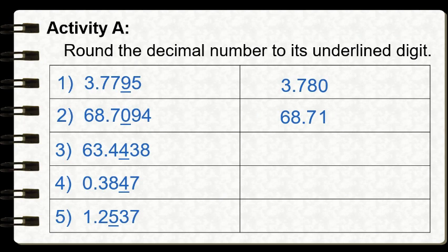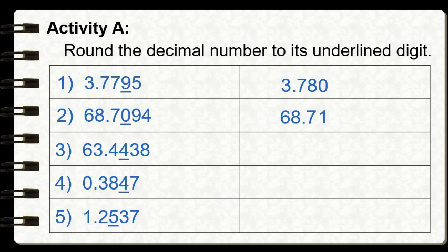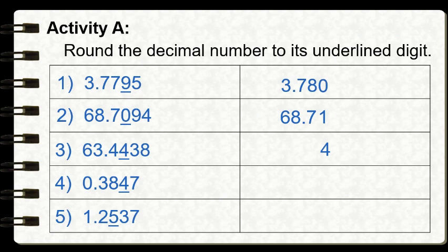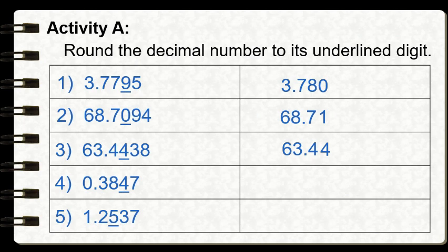Number three: sixty-three and four thousand four hundred thirty-eight ten-thousandths, with the underlined digit four occupying the hundredths place. The digit to the right of our rounding place is three. Since three is less than five, we round down — we retain the digit four. We copy all digits to the left: sixty-three and four tenths. We drop all digits to the right — thirty-eight. So our answer is sixty-three and forty-four hundredths.